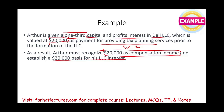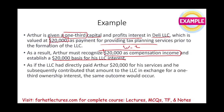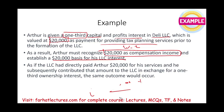Think of it this way: the LLC gave Arthur a check for $20,000. Arthur turned around and wrote the check back to the LLC and got a one-third interest in the partnership. Simply put, there was no money exchanged — they gave him the partnership interest. But it's as if they did this exchange, and that's why the $20,000 is compensation income that's taxable, and the basis is $20,000.